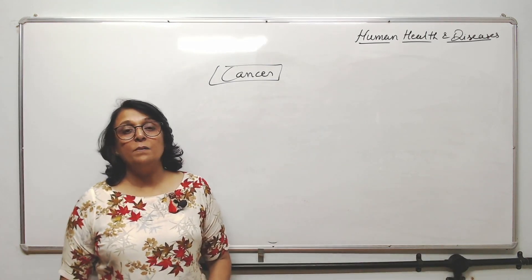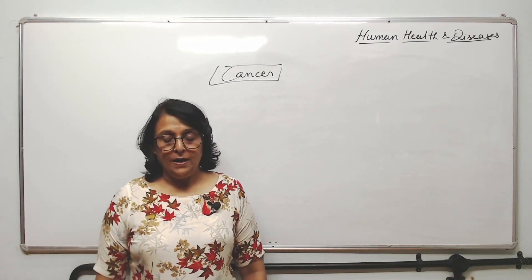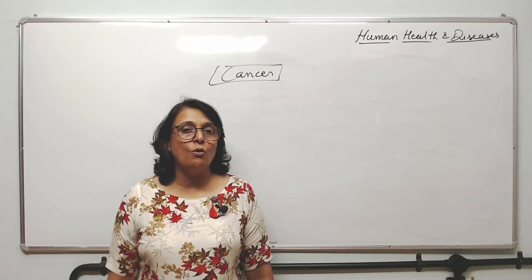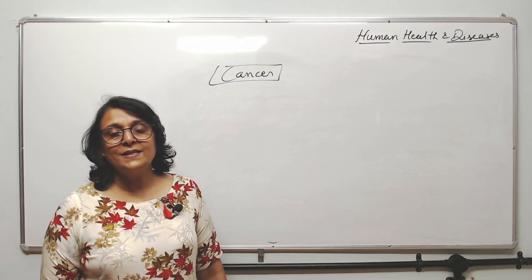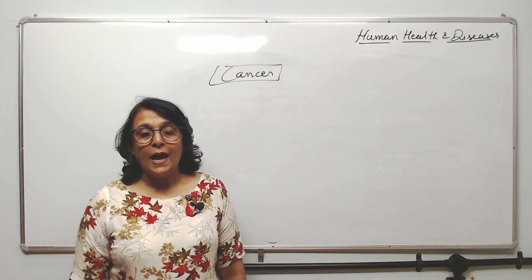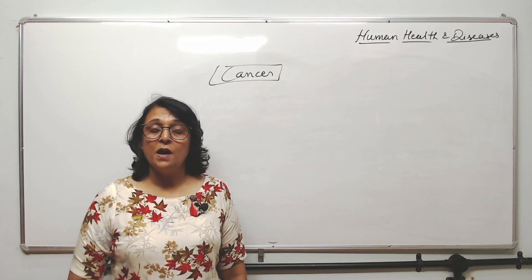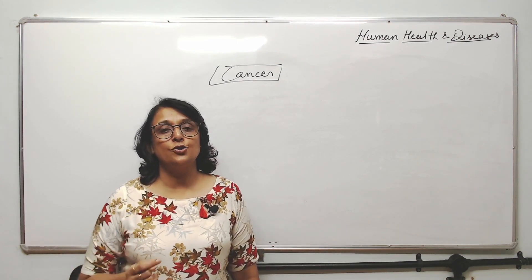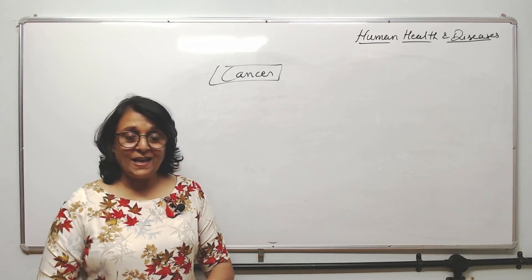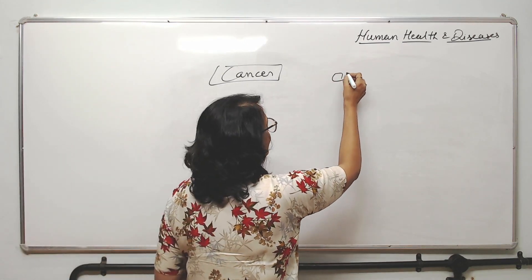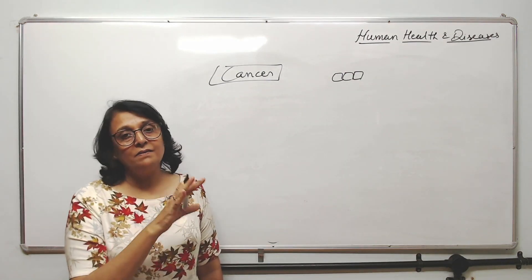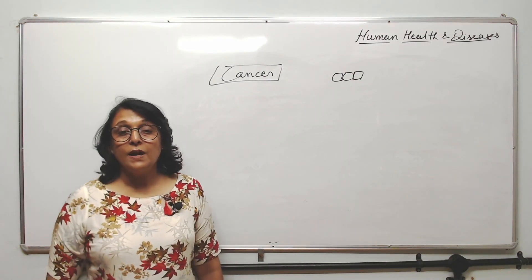The next thing we are taking up is cancer. What exactly is cancer? In very simple language, it is uncontrolled division of cells. Our cells divide only a fixed number of times, and we have mechanisms by which their division gets stopped. One such mechanism is known as contact inhibition — when cells come in contact with each other, they stop dividing.